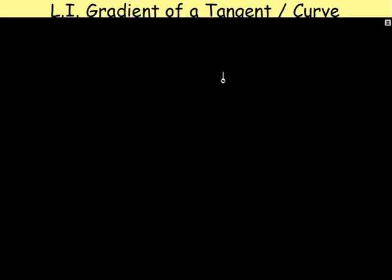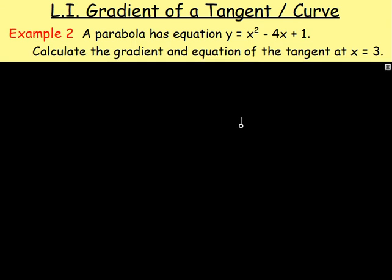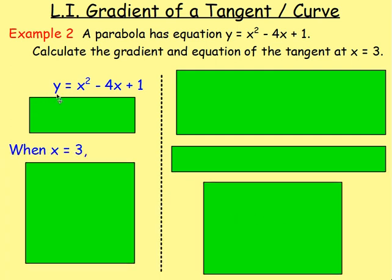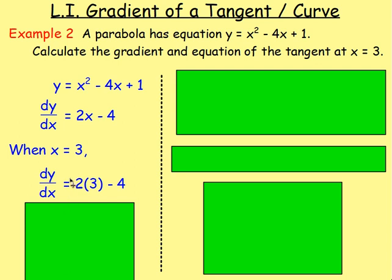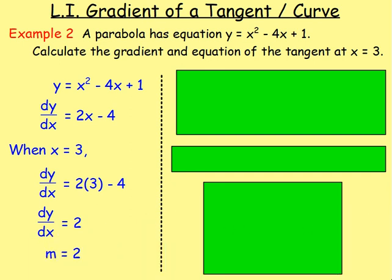Example 2: a parabola has equation y equals x squared minus 4x plus 1. Calculate the gradient and equation of the tangent at x equals 3. To get the gradient, differentiate. dy by dx: differentiating x squared gives 2x, differentiating negative 4x gives negative 4, and the 1 disappears. When x equals 3, dy by dx equals 2 times 3 minus 4, which is 6 minus 4, which gives 2. Therefore the gradient equals 2.